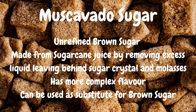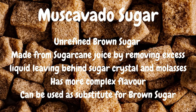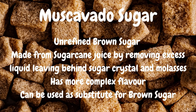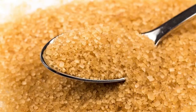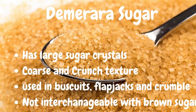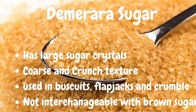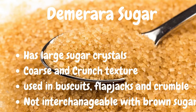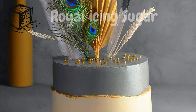Muscovado sugar is a special type of sugar — it's unrefined brown sugar. It's not as common in supermarkets, but I quite like using it because it has a very nice, complex flavour, and I use it in place of brown sugar. You might also find demerara sugar in your local supermarket. It has quite large sugar crystals and it's good for making things like biscuits and flapjacks because it has a coarse and crunchy texture.